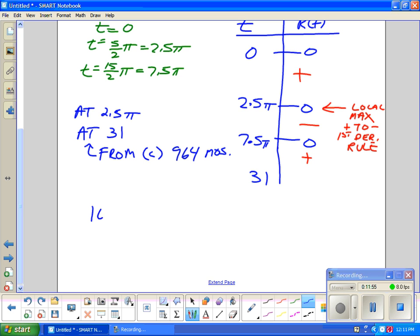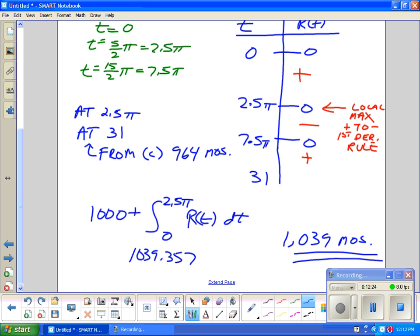What do I have to do? I just have to get the number of mosquitoes at 2.5π times and decide if that's more or less than 964. I have to do 1000 plus the integral from 0 to 2.5π of R(t)dt, which equals 1039.357. That means there were 1,039 mosquitoes, the max because it's more than 964.